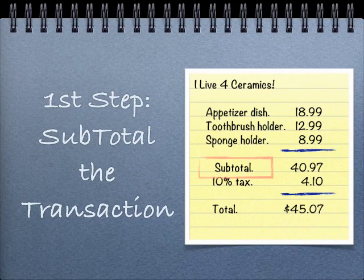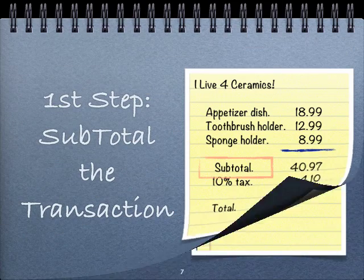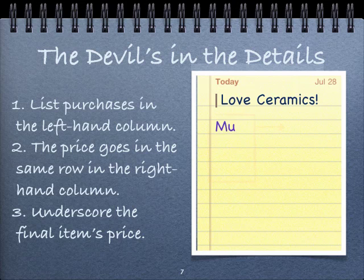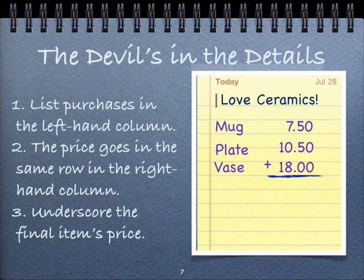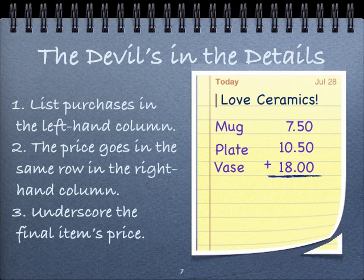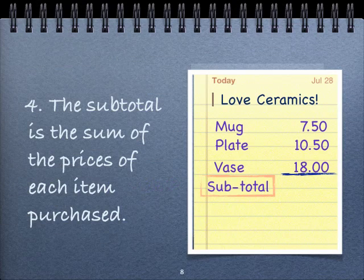Your first step is to subtotal the transaction. The devil's in the details when it comes to math, so list your purchases in the left-hand column and the price goes in the same row in the right-hand column. After you've got those set up, underscore the final item's price. The subtotal is the sum of the prices of each item purchased — in this case, $36.